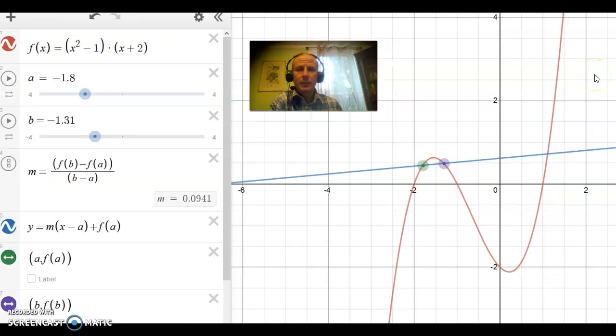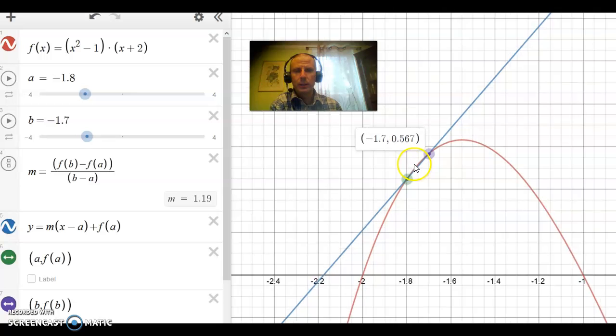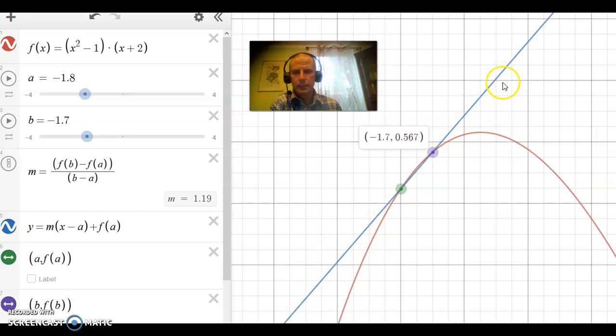Now to motivate the definition of the derivative at a point, we have to go way back to section 2.1 where we considered the tangent line problem. In that section, the goal was to approximate the tangent line to a curve by using secant lines. We take the second point—a secant line is just a line between two points—and by moving the second point closer and closer to the first point, we get that the tangent line gets closer and closer to the secant line.